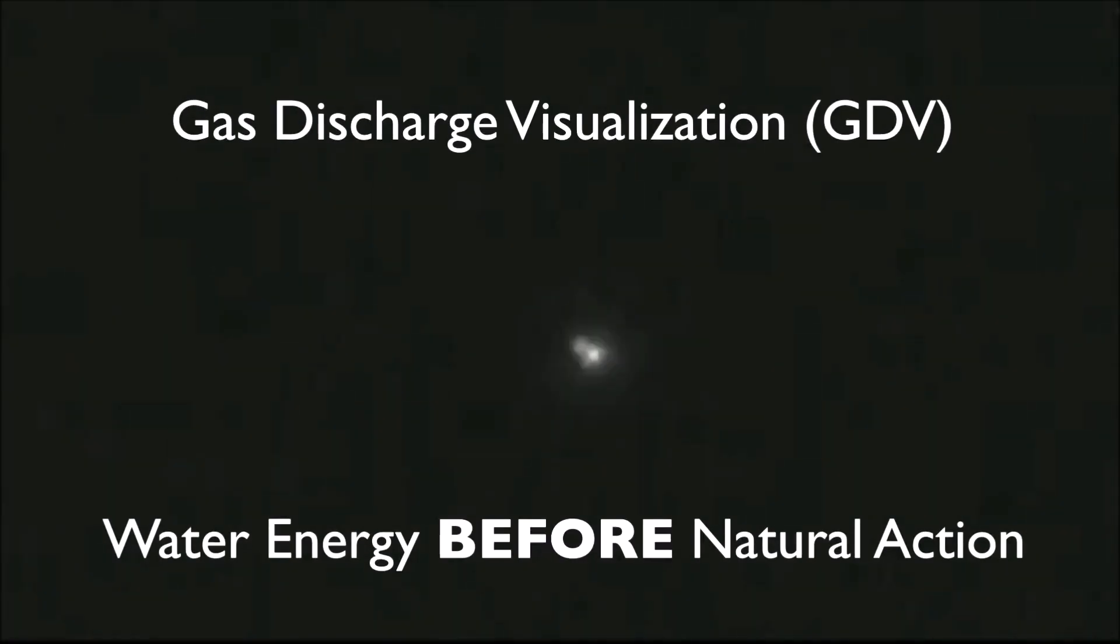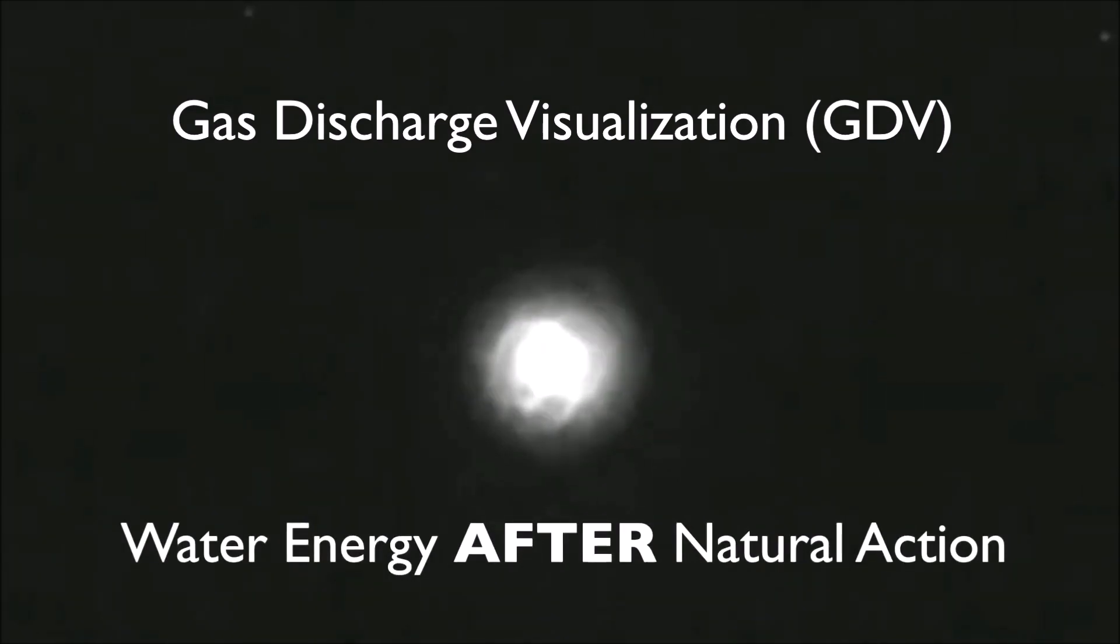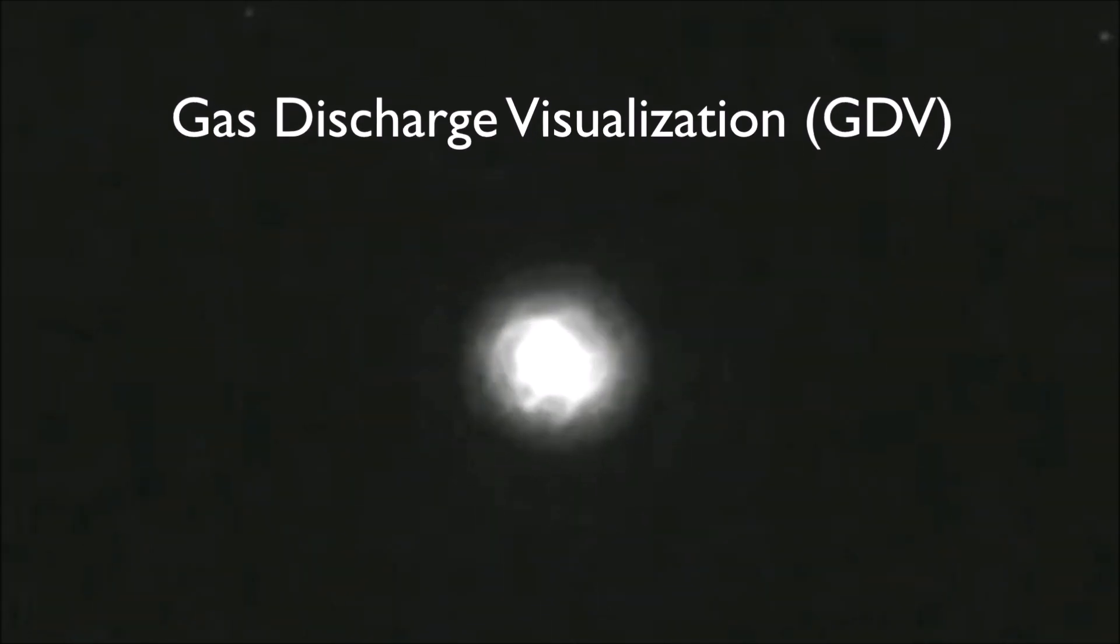The Gas Discharge Visualization, GDV, is a device used to measure the biomagnetic field in a water droplet. After water passes through our device, a more energetic field can be seen around the water, enhancing its life-supporting properties.